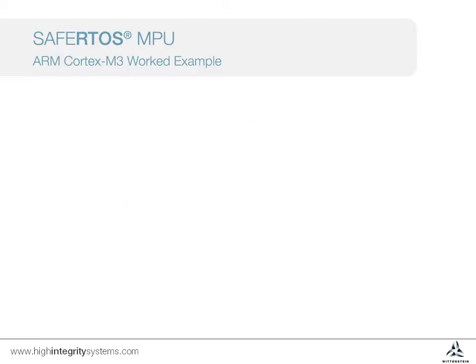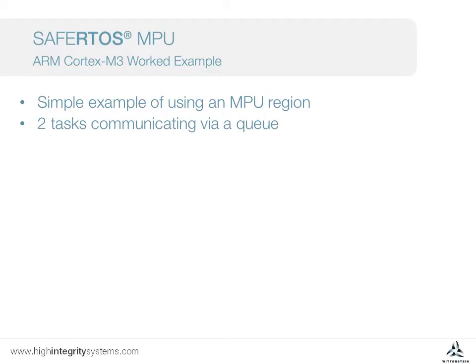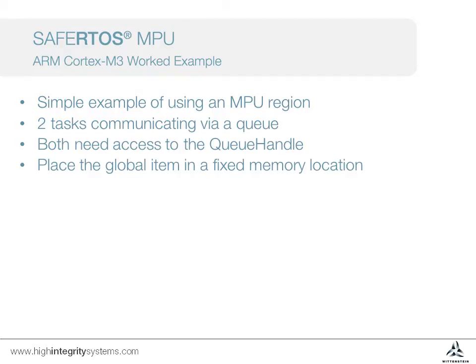In this series we are looking specifically at the ARM Cortex-M3 MPU. First let's consider a simple system which has tasks operating in user mode — by which I mean unprivileged mode — and so MPU restrictions will apply to memory access. In this system two tasks are communicating via a queue, so both tasks need access to the queue handle. We can create a queue handle as a global data variable, and we want to place this at a known, fixed memory location.